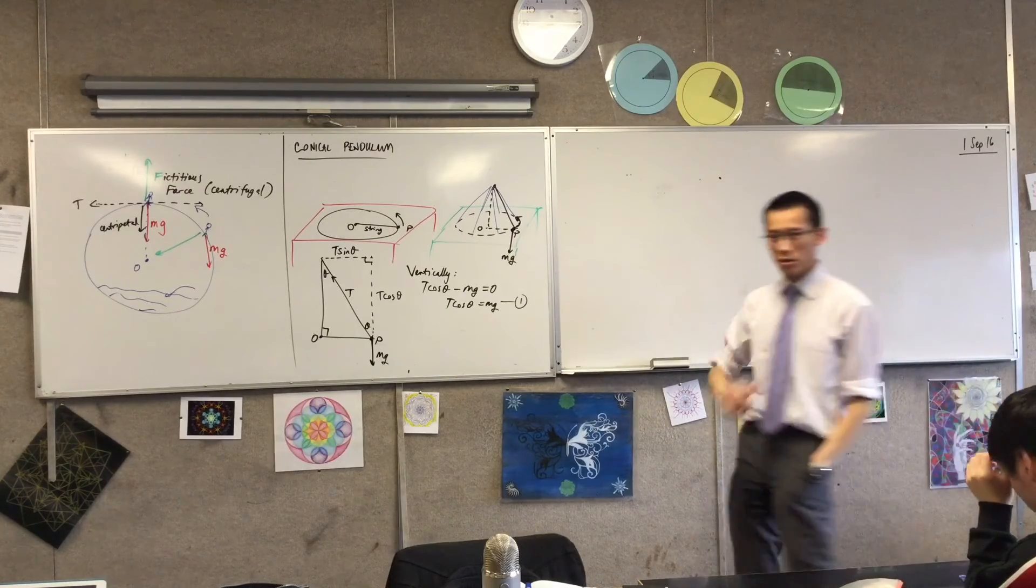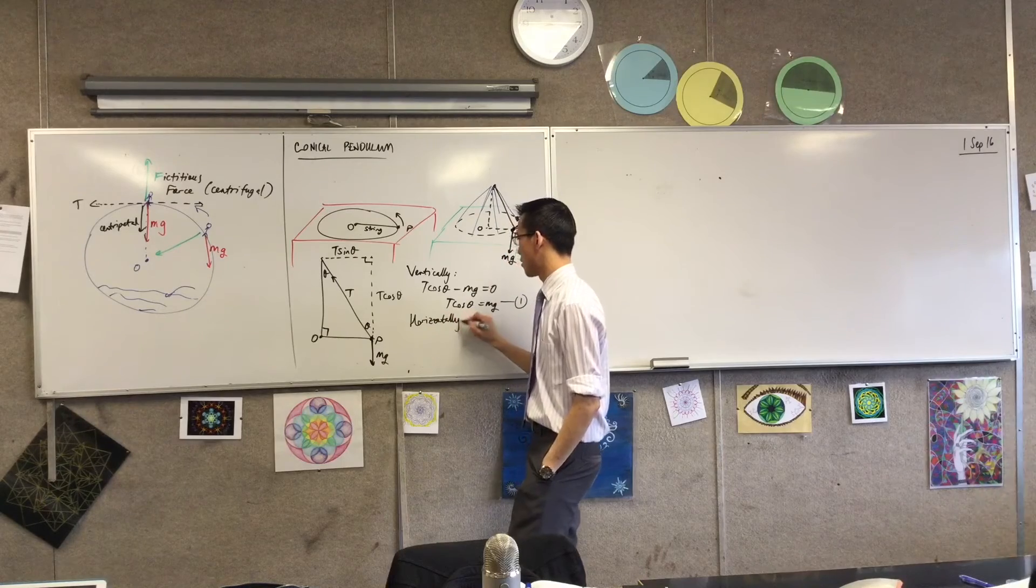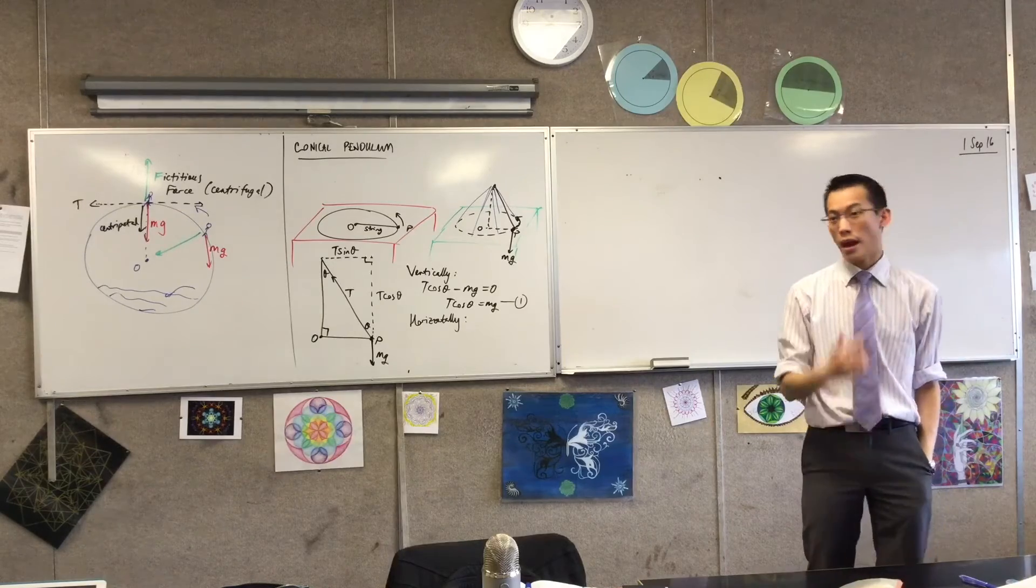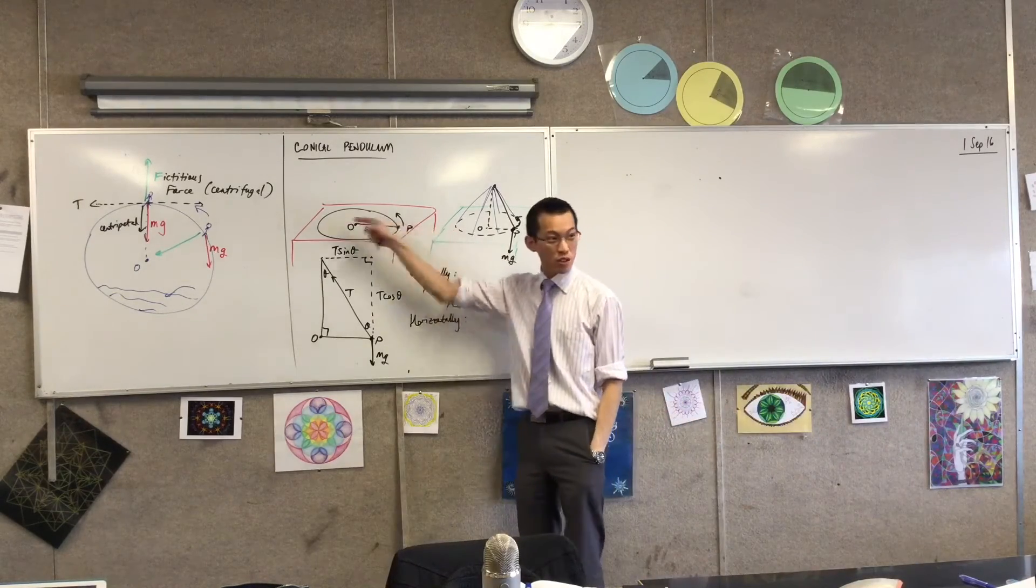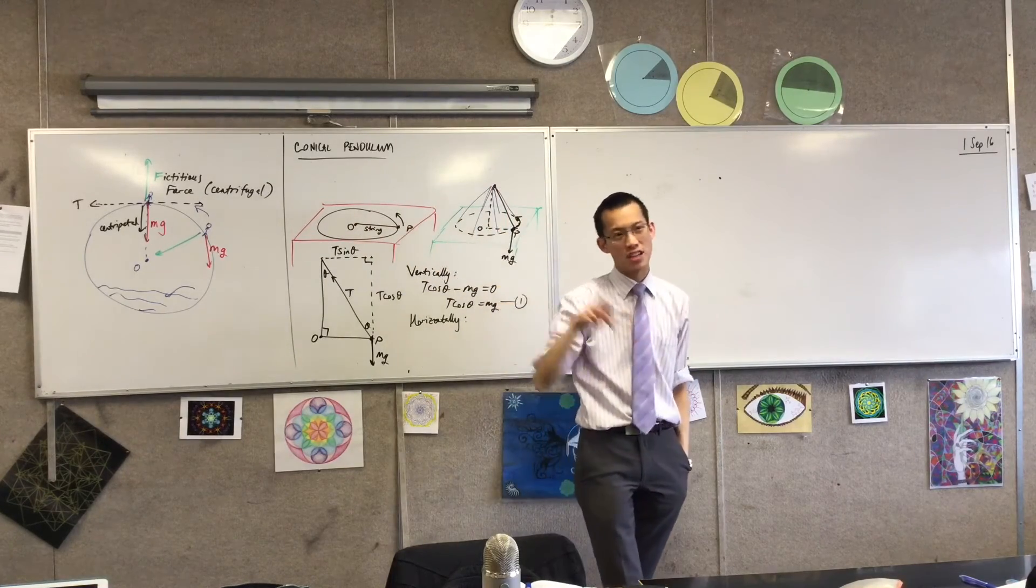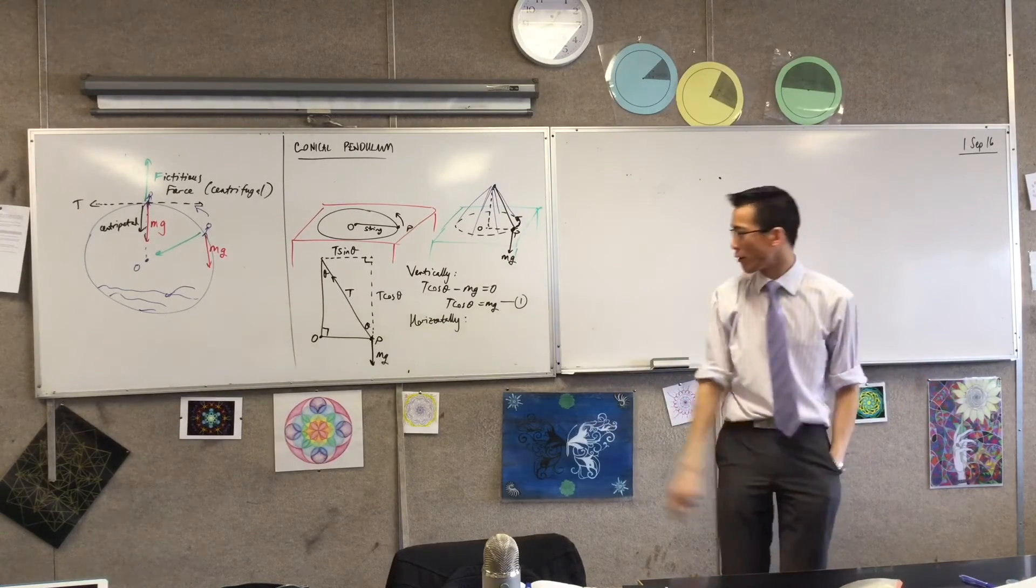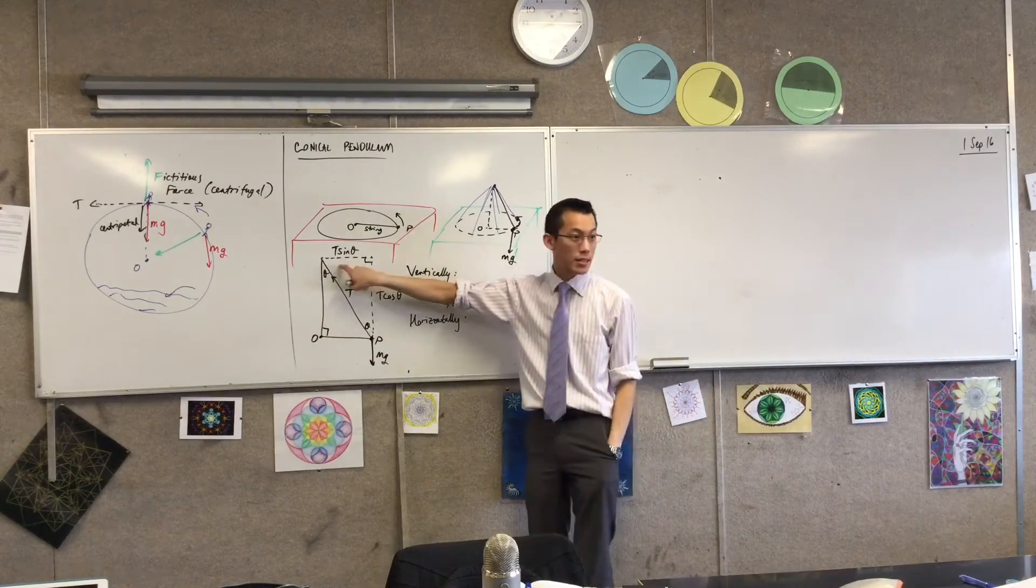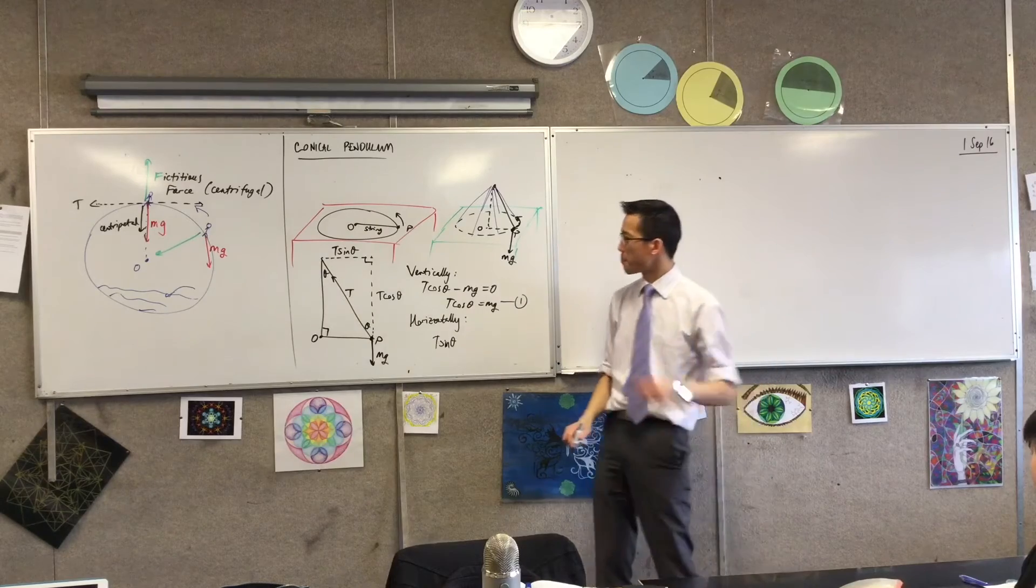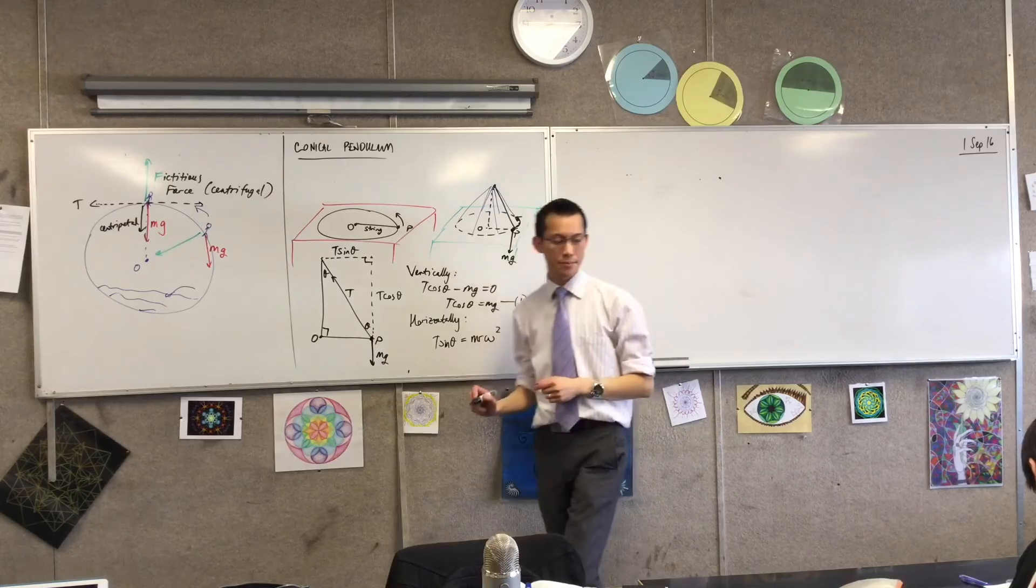Now, what about horizontally? On the table, what's happening? There is uniform circular motion, and I know for uniform circular motion that the resultant force toward the center of that motion is, I just said towards the center. So that's just going to be, the magnitude will just be m r omega squared, right? They should be equal to this. Does that make sense? So I'm going to say horizontally, T sine theta equals m r omega squared.